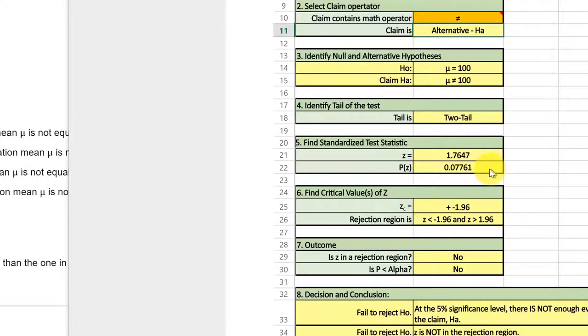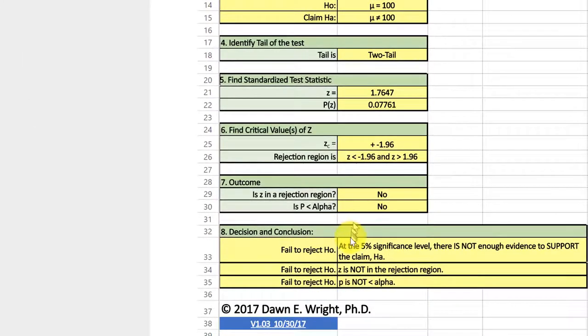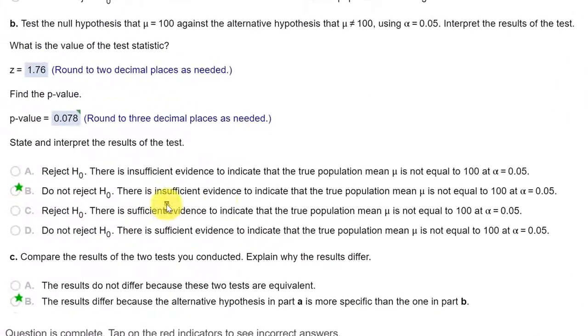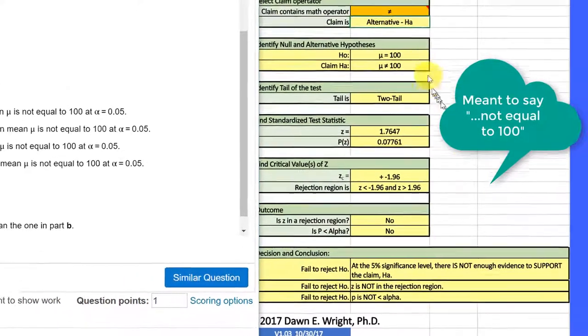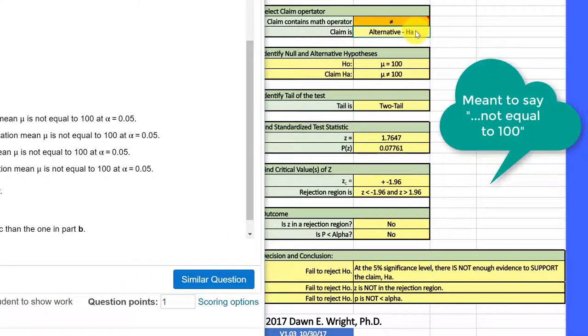The answers are that the p value is not less than alpha, therefore we fail to reject. And the calculator will give you the critical value and the fact that this test statistic does not fall in the rejection region. So both of those say fail to reject. And the conclusion is there is insufficient evidence to indicate the population mean is not equal to zero, which is what we're saying. There is not enough evidence to support the claim that the true population mean is not equal to zero.